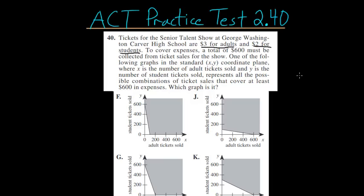One of the following graphs in the standard XY coordinate plane, where X is the number of adult tickets sold and Y is the number of student tickets sold, represents all the possible combinations of ticket sales that cover at least $600 in expenses. Which graph is it?